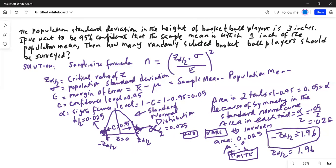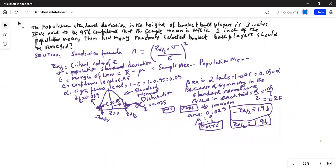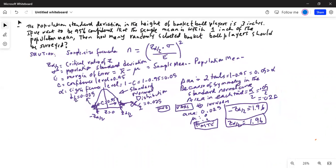By symmetry, z alpha by 2 is positive 1.96. We will need this value in the formula, so let me create some space.